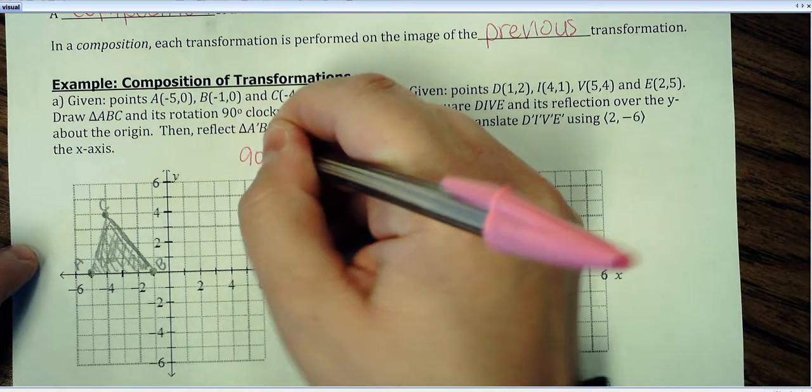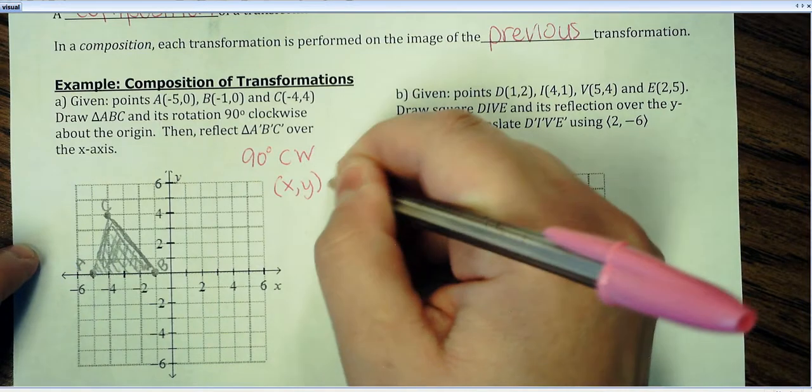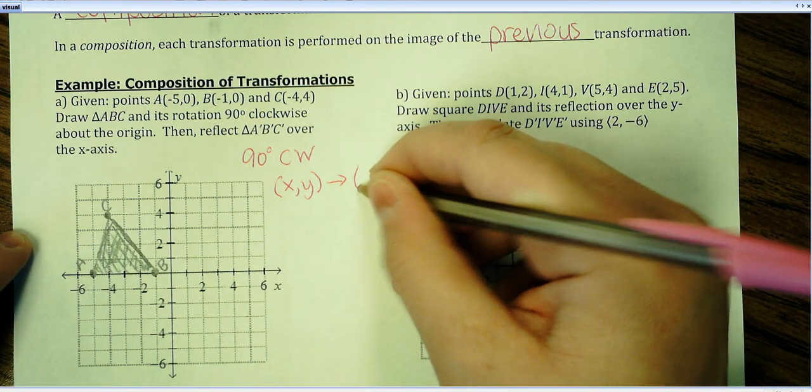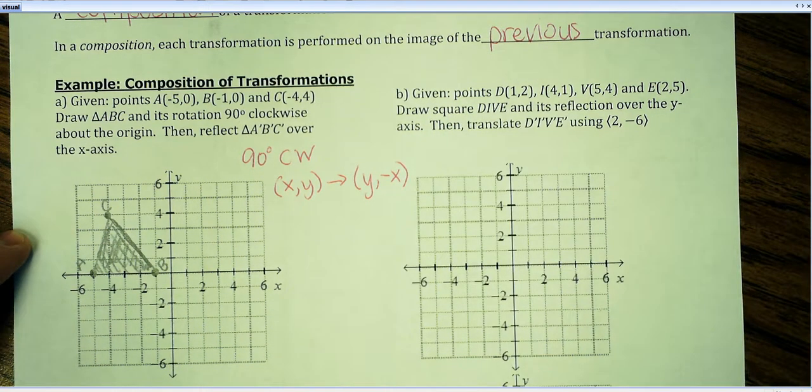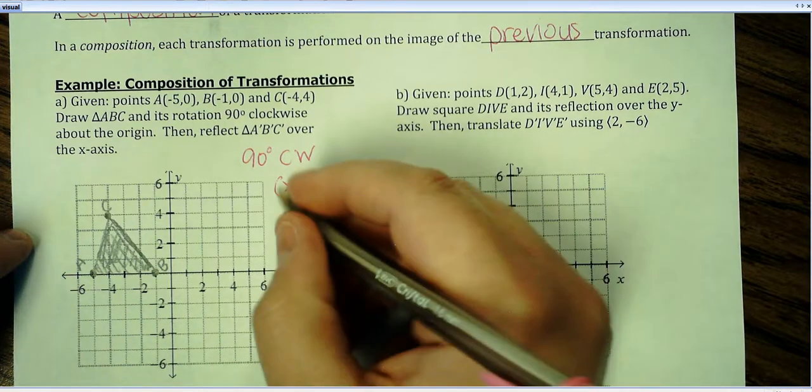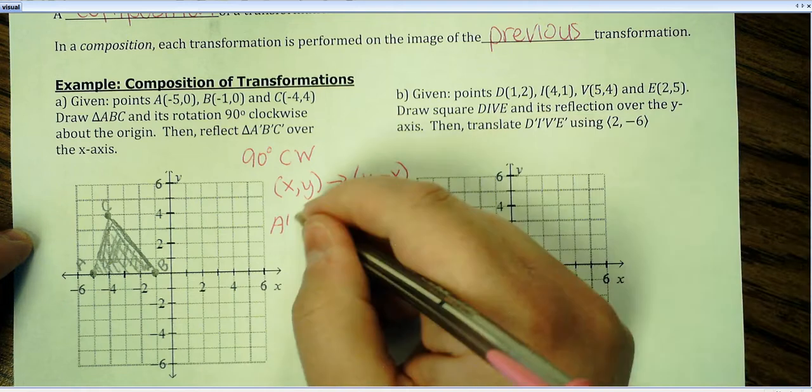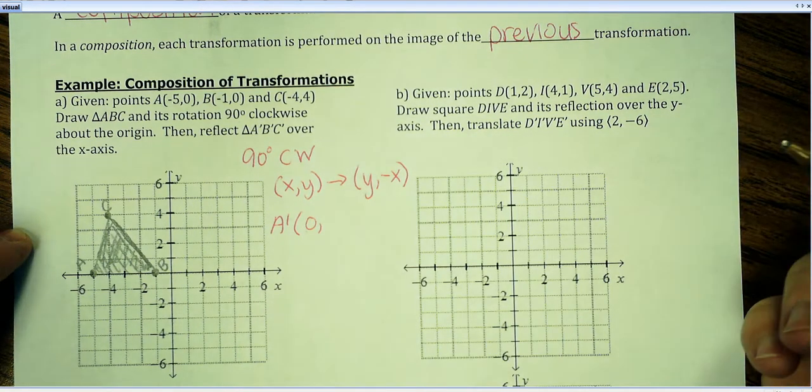Now, 90 degrees clockwise rotation is going to take the original point and map it onto Y and then the opposite of X. So I'm going to just take each one of these points and go ahead and do that. So A prime is originally negative 5, 0. So the Y coordinate just becomes the X coordinate. So I don't have to do much there.